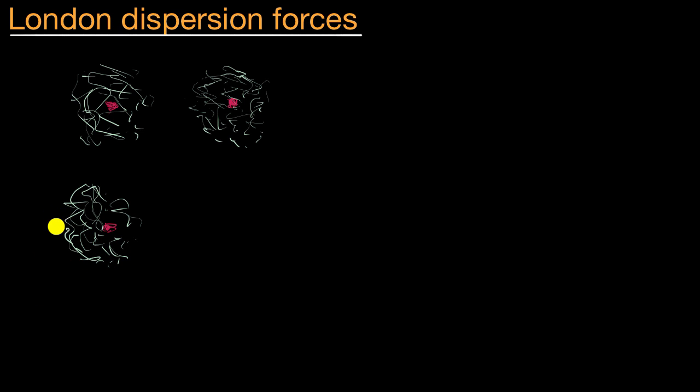For that brief moment, you have a partial negative charge. This is the Greek letter delta, which is used to denote partial charge. On this side, you might have a partial positive charge. Because when it was evenly distributed, the negative charge was offset by the positive charge of the nucleus. But here on the right side, because there's fewer electrons, maybe you have a partial positive. On the left side, you have most of the electrons in that moment, partial negative.